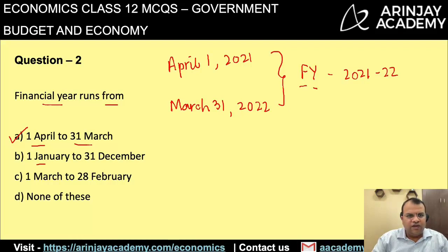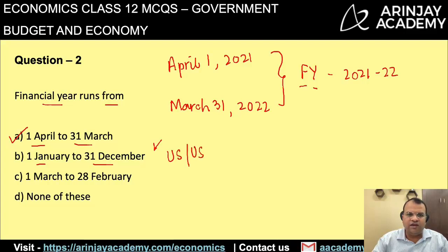The period of 1st January to 31st December is considered a financial year in many Western countries, also known as the calendar year. This is the financial year in countries like the US and UK, but in India it is April 1 to March 31. The option of 1st March to 28th February is not the right answer.